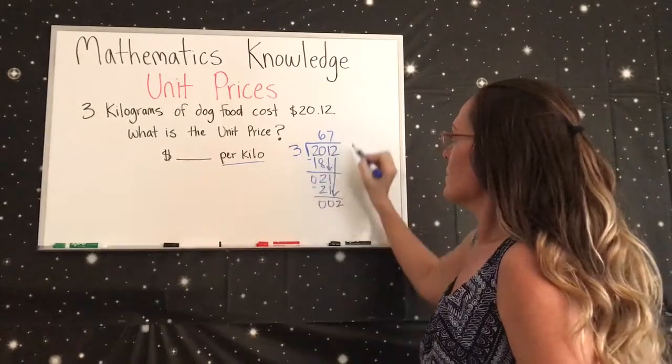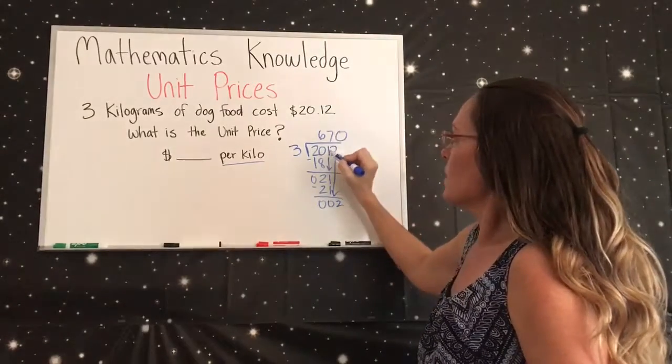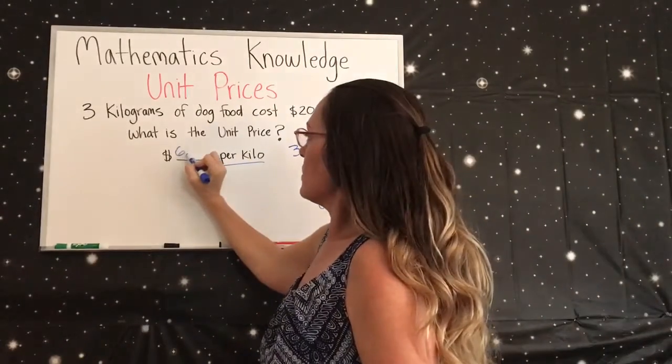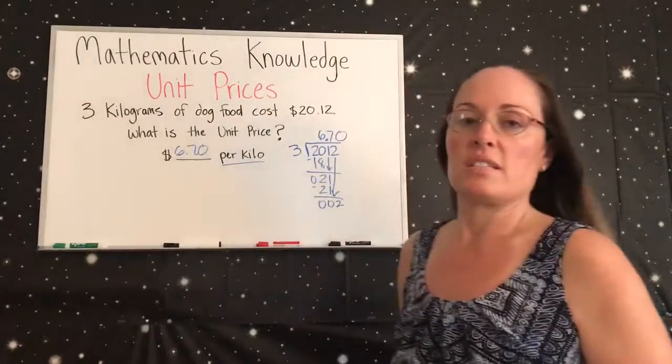3 goes into 2 zero times. Bring back up that decimal and you have $6.70 per kilo.